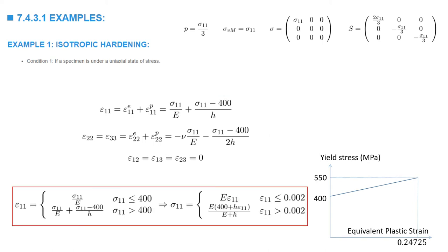The relationship between epsilon_11 and sigma_11 shows elastic behavior when sigma_11 is less than 400 MPa. Once sigma_11 increases above 400 MPa, we have elasto-plastic behavior where the total strain is divided into an elastic component and a plastic component.